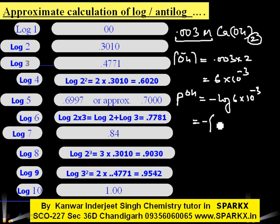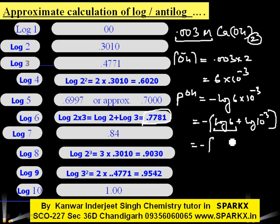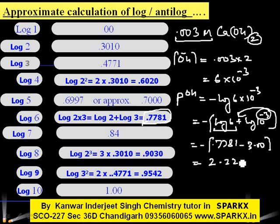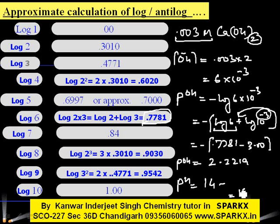Calculating: pOH = −(log 6 + log 10⁻³) = −(0.7781 − 3.00) = 2.2219. Since pH + pOH = 14, the pH value = 14 − 2.2219 = 11.7781.